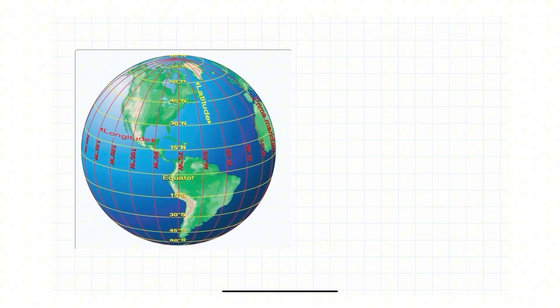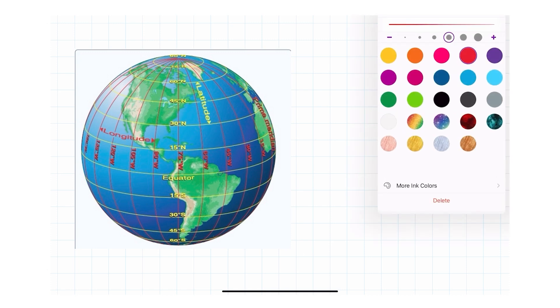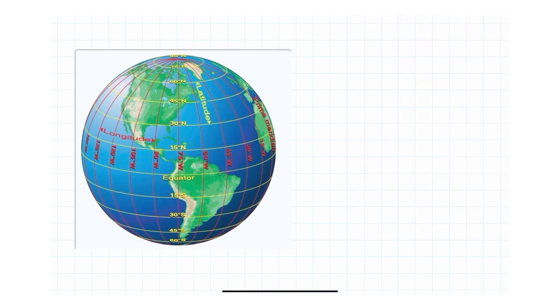So remember, longitude lines run from the North Pole to the South Pole. They start at the prime meridian. If we look at the prime meridian in Greenwich, England, we just keep moving across here. Here's the zero line, 15, 30, all the way around the Earth.